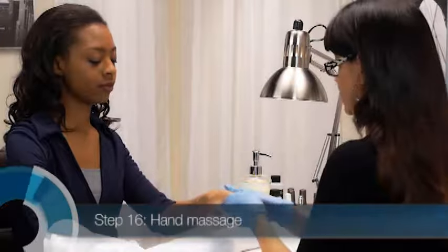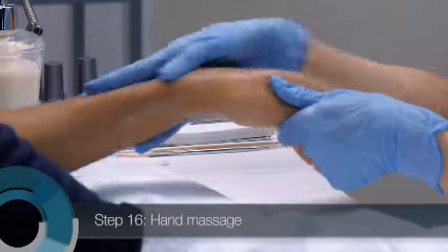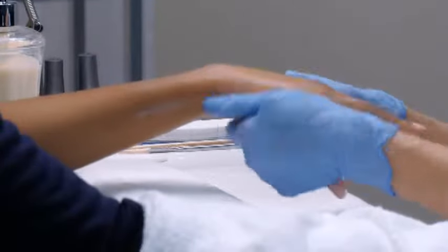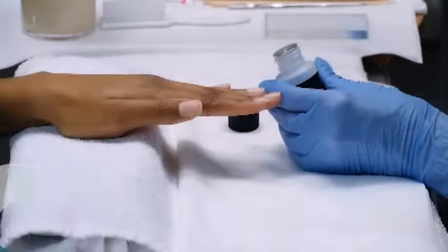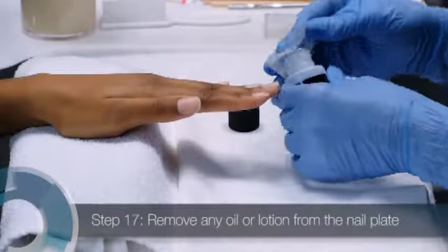Apply massage lotion or oil to the client's hands and perform a hand and arm massage. For step-by-step instructions, watch the hand and arm massage segment. After completing the massage, remove all traces of the lotion and oil from the nail plate.